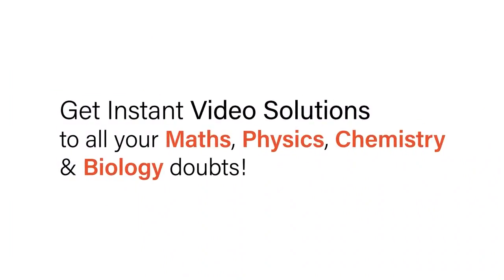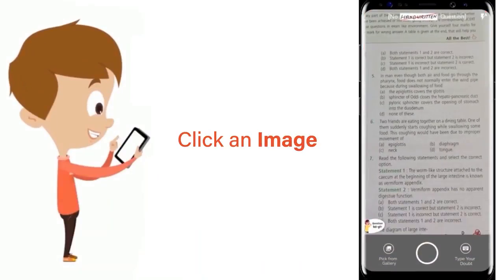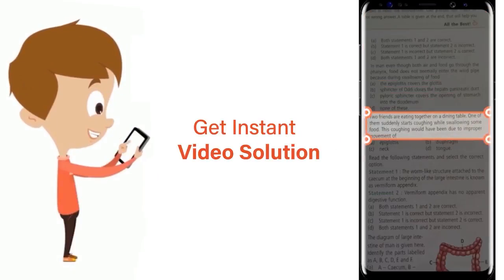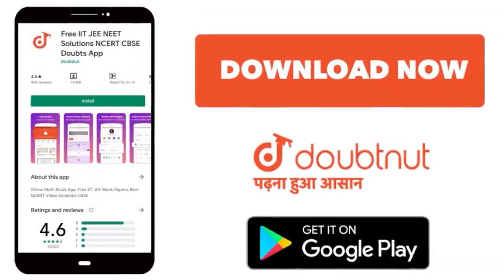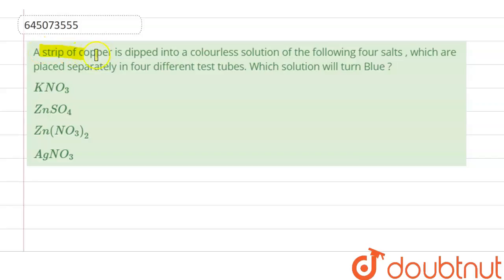With Doubtnet, get instant video solutions to all your math, physics, chemistry, and biology doubts. Just click the image of the question, crop the question, and get instant video solutions. Download Doubtnet app today. Our question is: a strip of copper is dipped into a colorless solution of the following four salts, which are placed separately in four different test tubes. Which solution will turn blue?